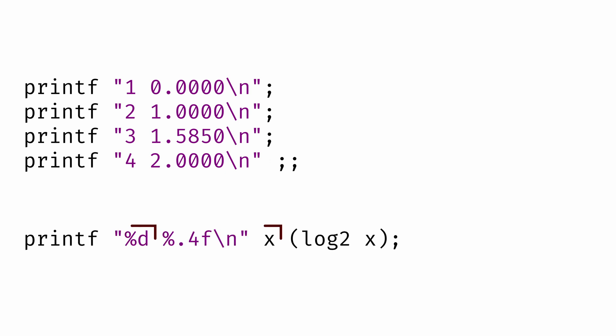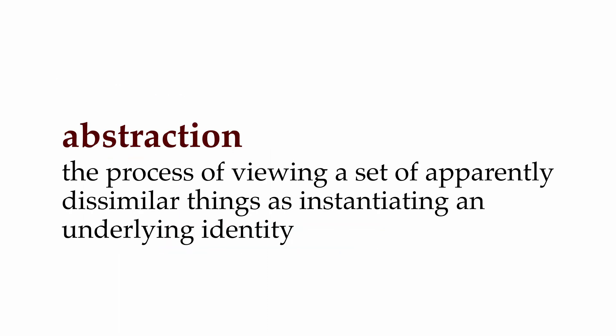Each line, we print out a decimal number, we call it x, the logarithm of x to four decimal places, and a new line. This is abstraction, the process of viewing a set of apparently dissimilar things as instantiating an underlying identity. Different styles of programming give us different mechanisms for using these abstractions.